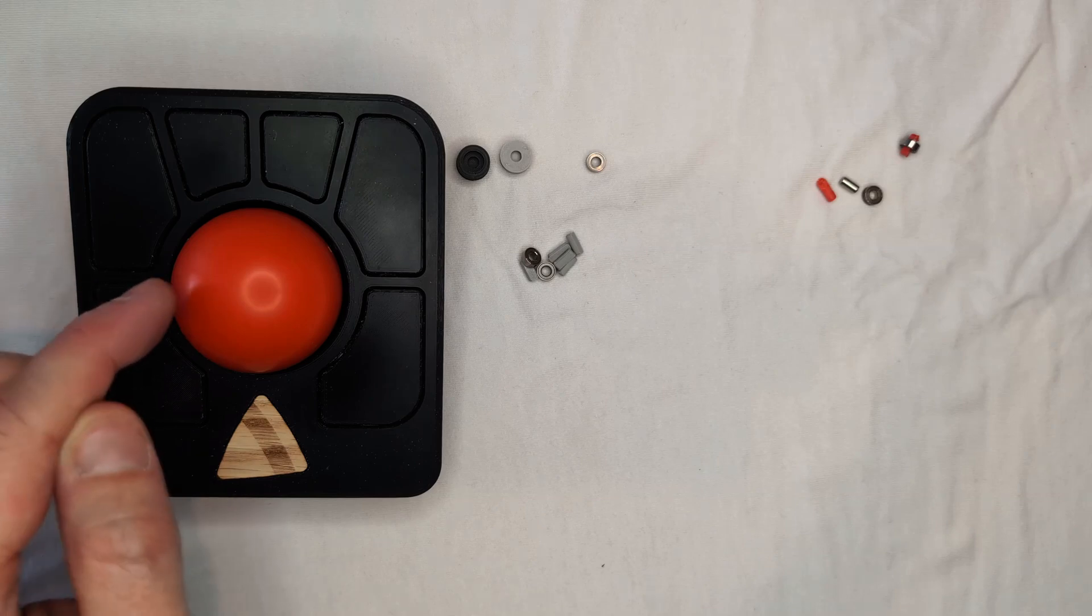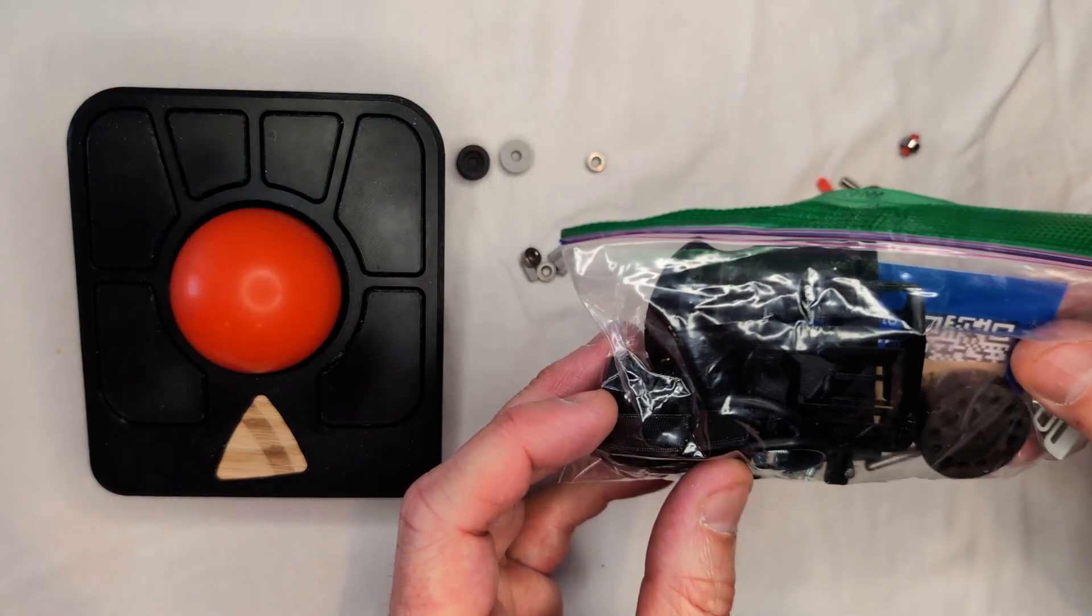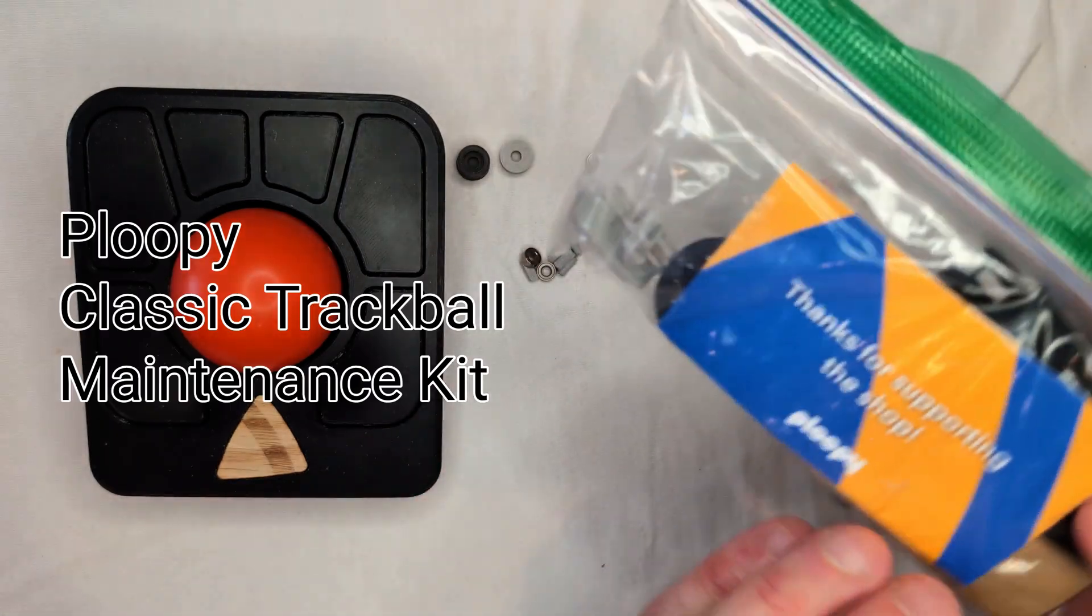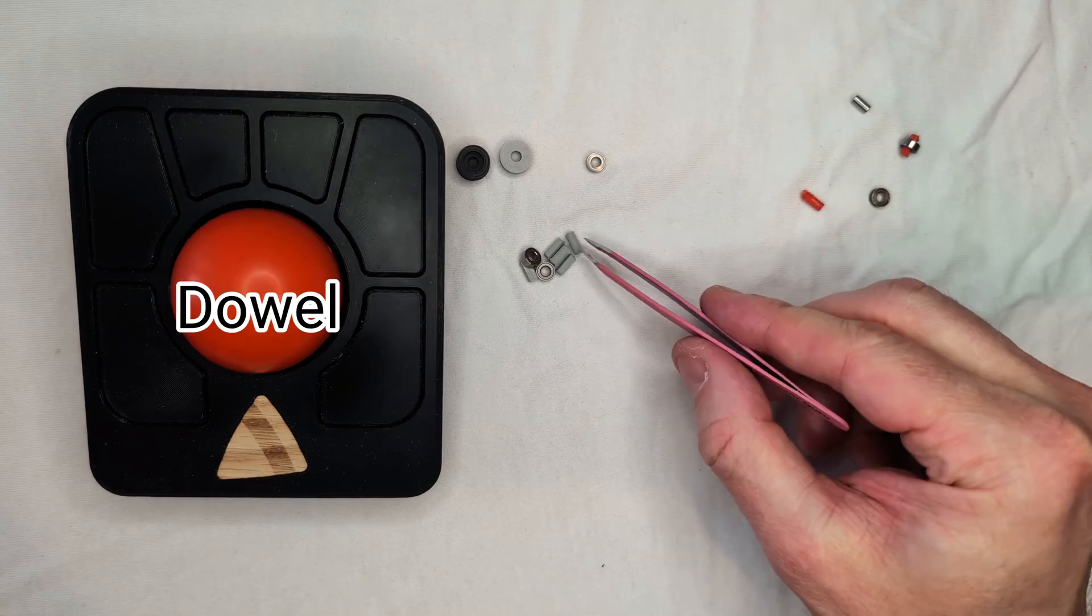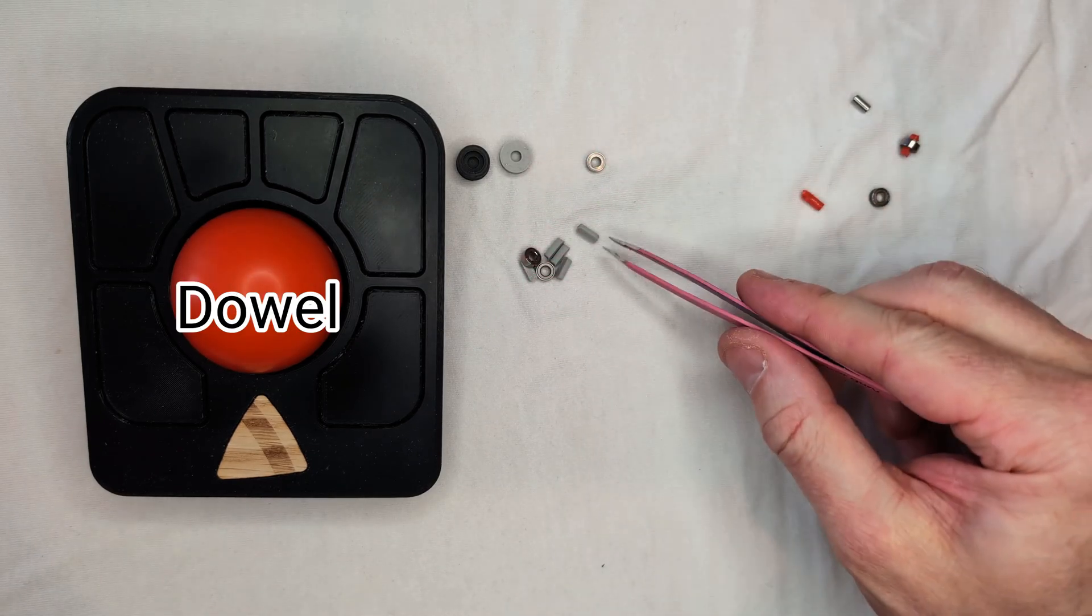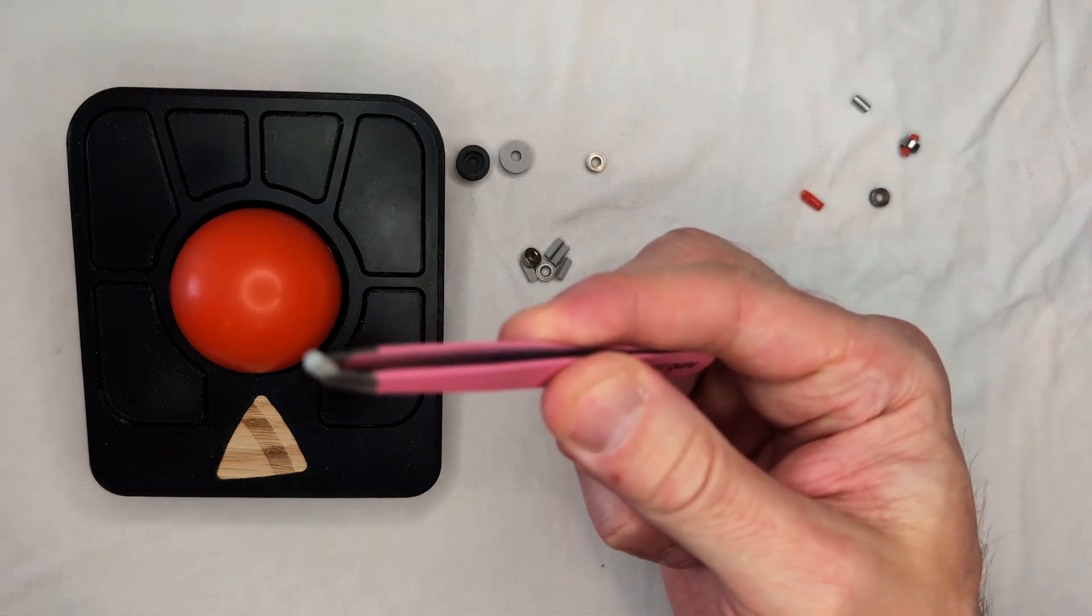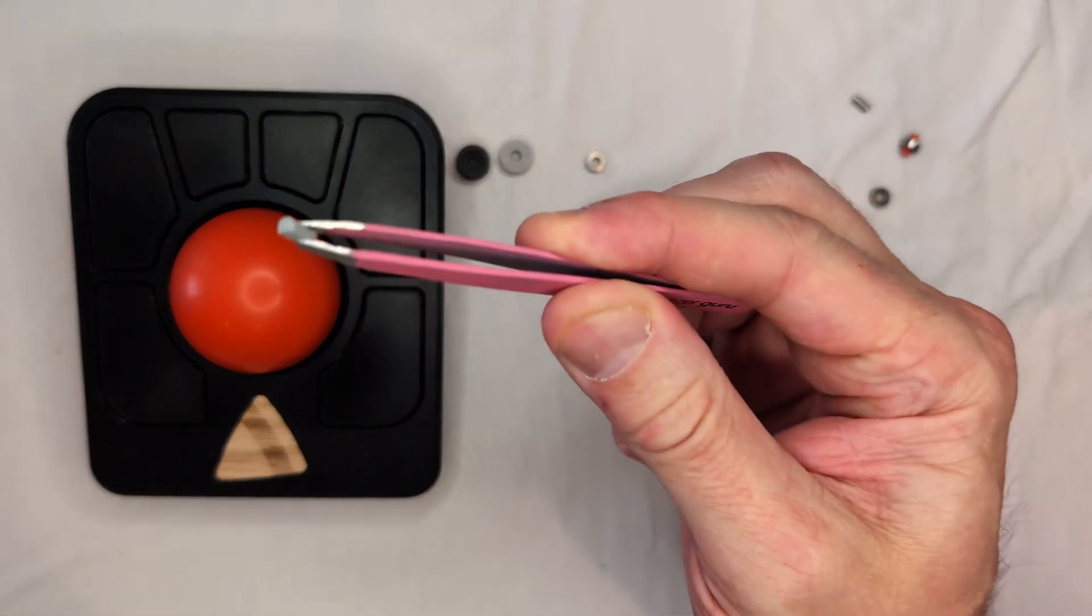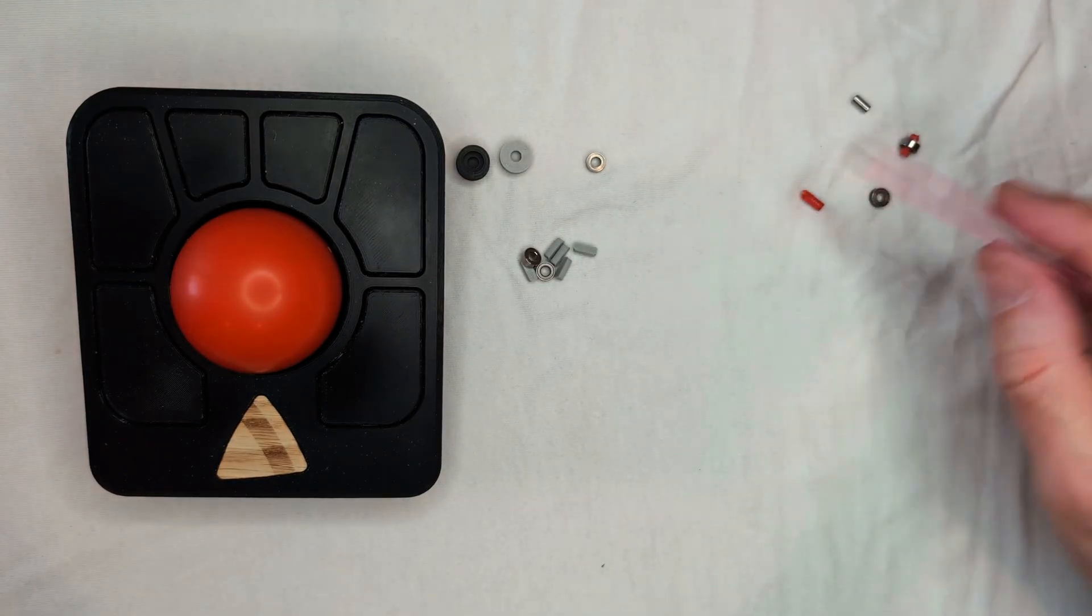The first thing you need to do is you have to purchase the Ploopy repair kit. And the reason is that these dowels that come with the kit are a very specific size, 3mm by 7mm is my estimation, that you cannot find online.